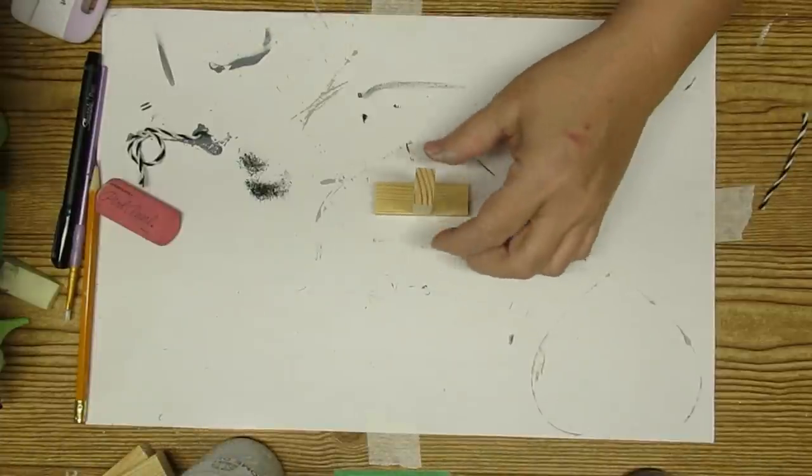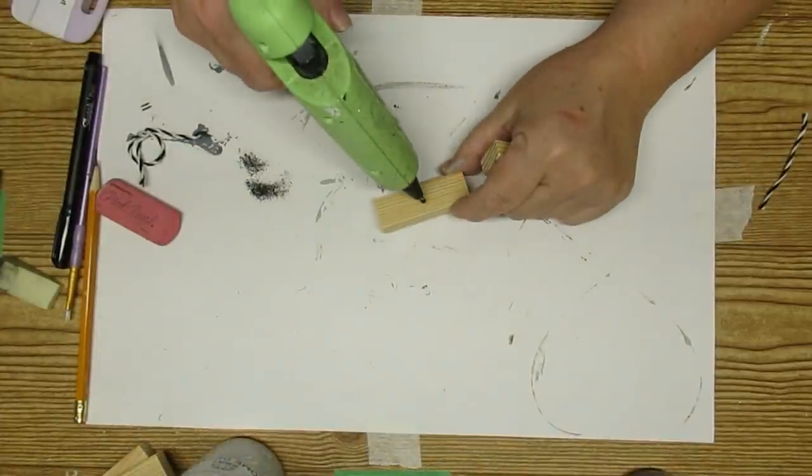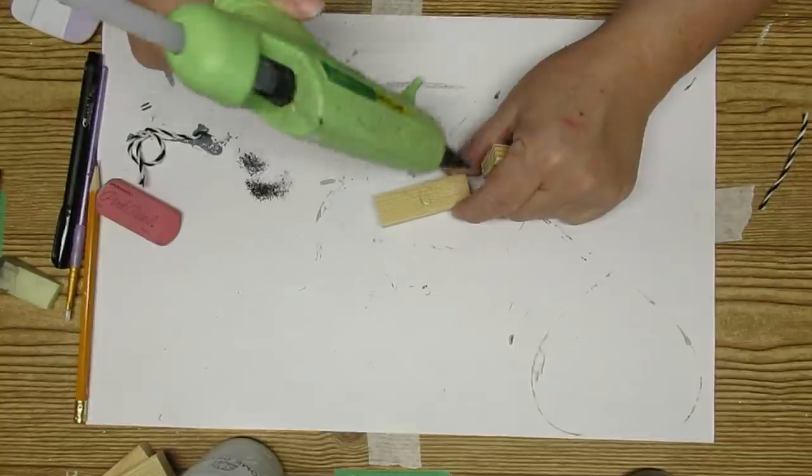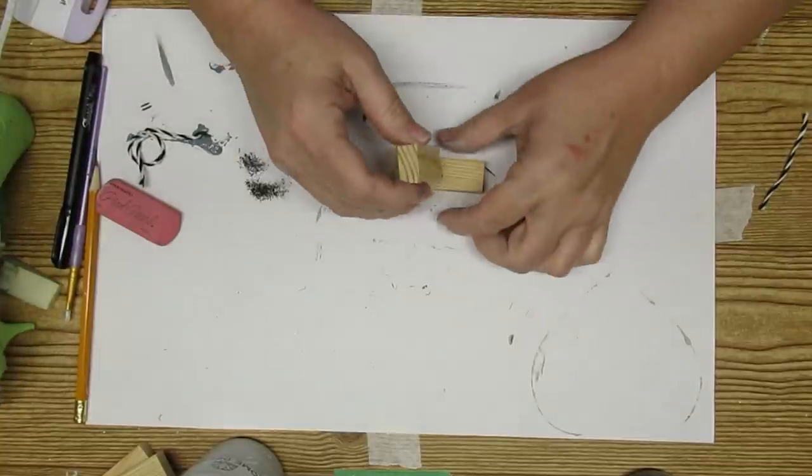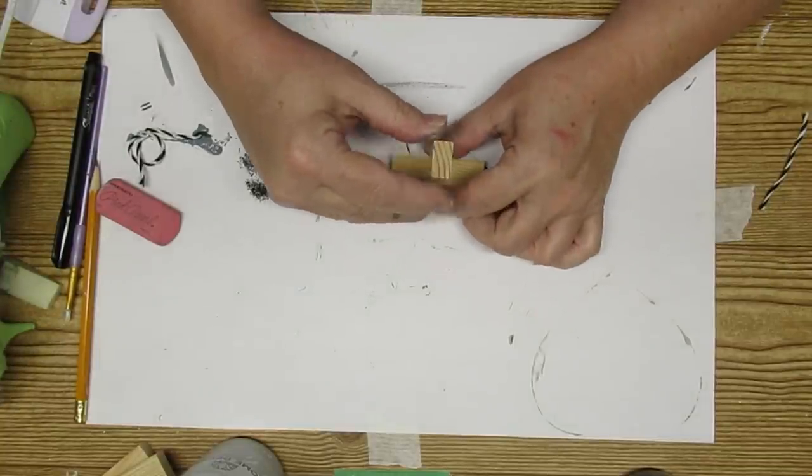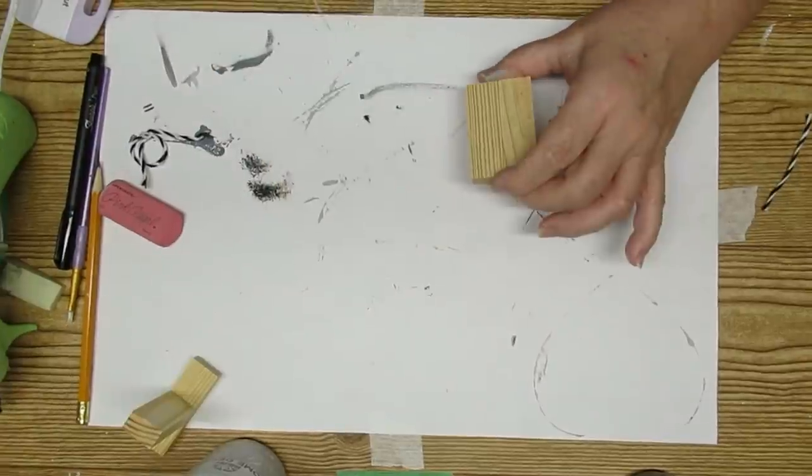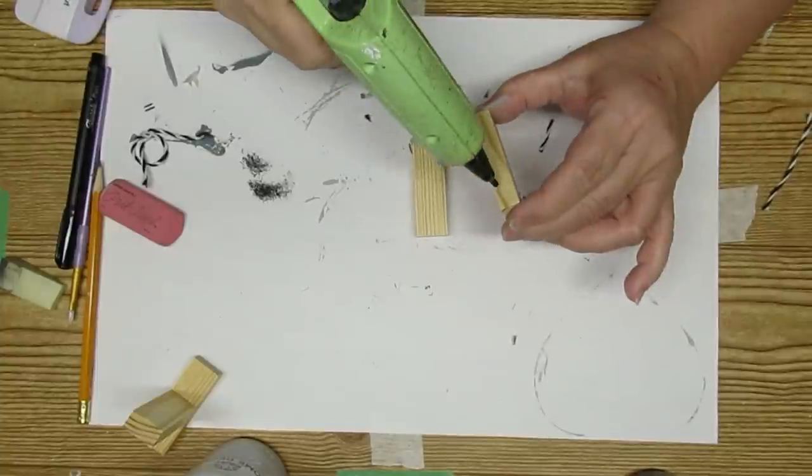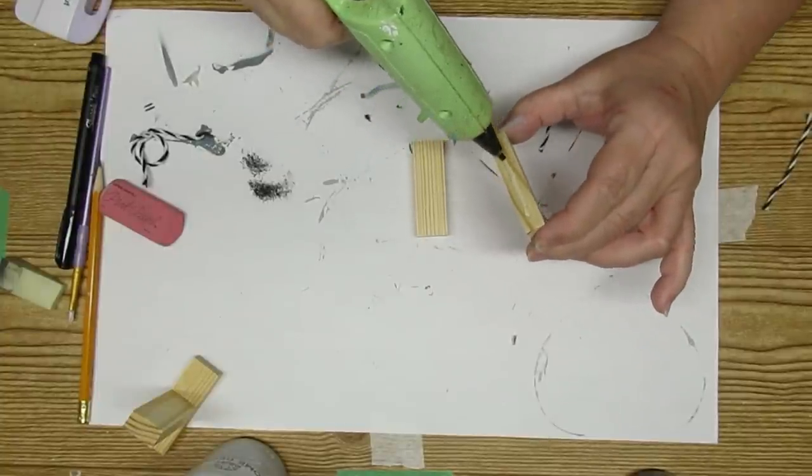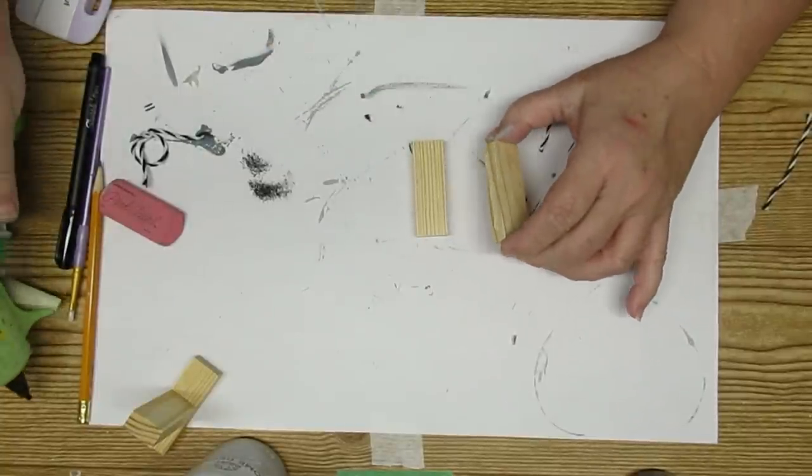DIY number three is this little mailbox. I think it turned out so cute. I started off with two of the larger size tower blocks and I'm gluing them together in the shape of a T. Next I'm taking two more and I'm going to glue them together side by side. This will create the base of the mailbox.